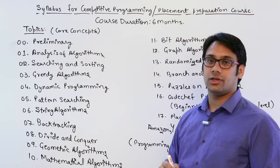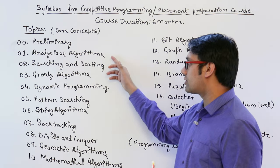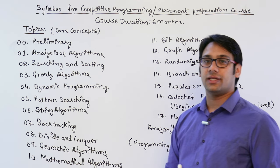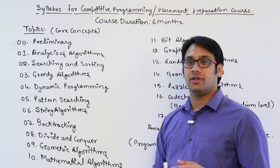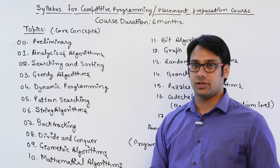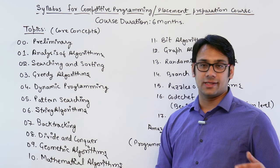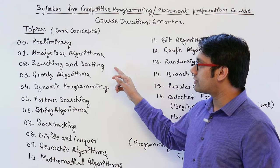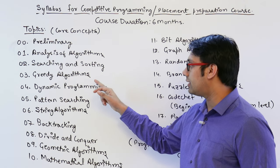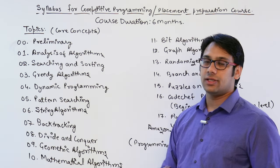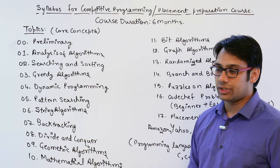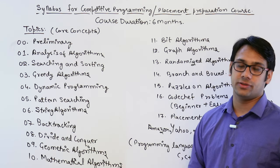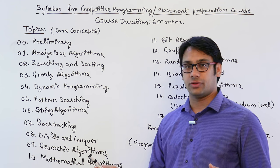After that, we will cover analysis of algorithms based on time complexity criteria, because there are different ways of analyzing algorithms. Then we will discuss searching and sorting algorithms, then greedy algorithms. In GATE we only discuss three to four greedy algorithms, but here we are going to discuss a lot more algorithms.